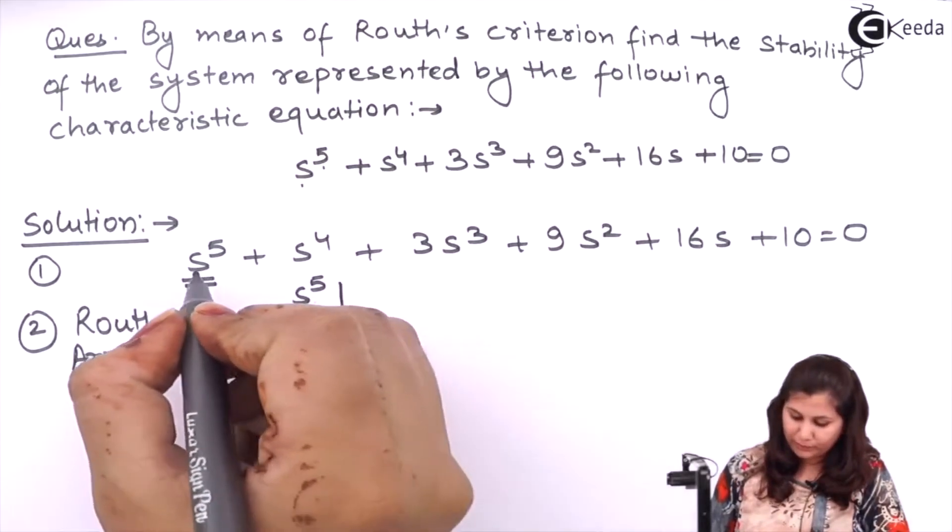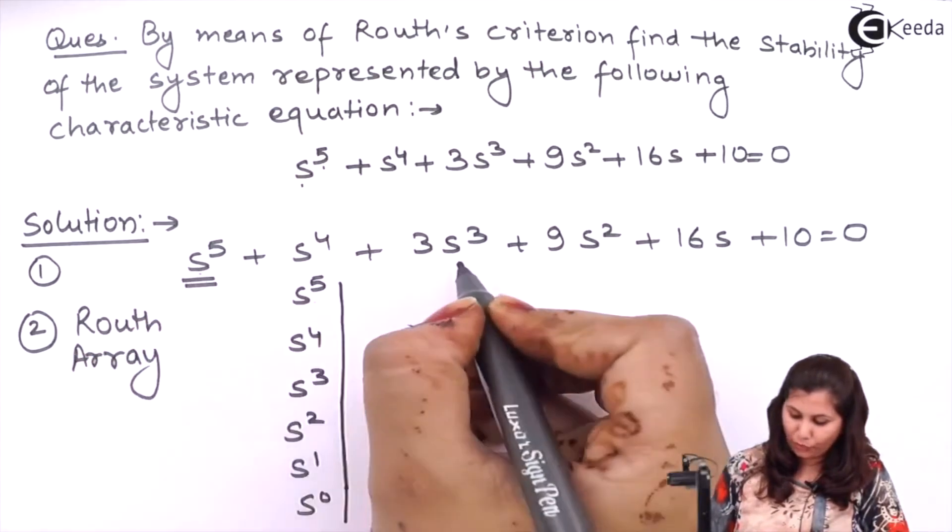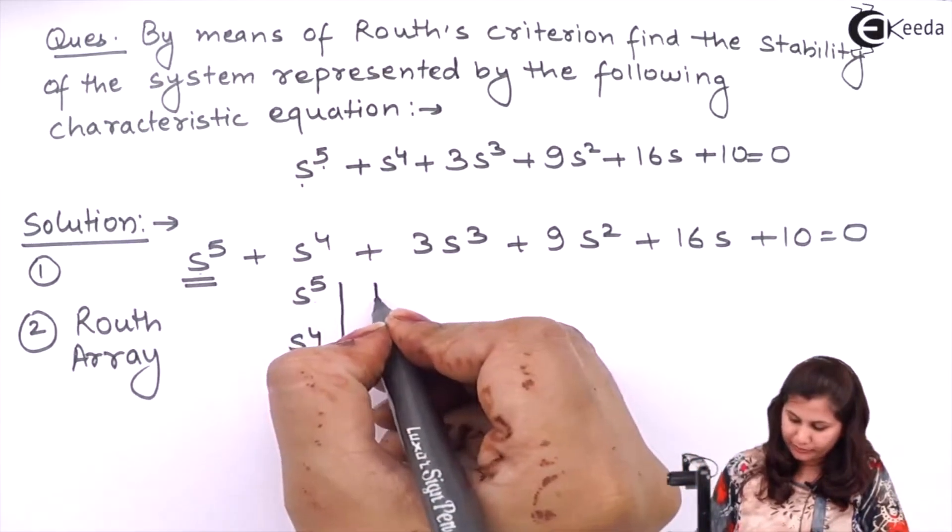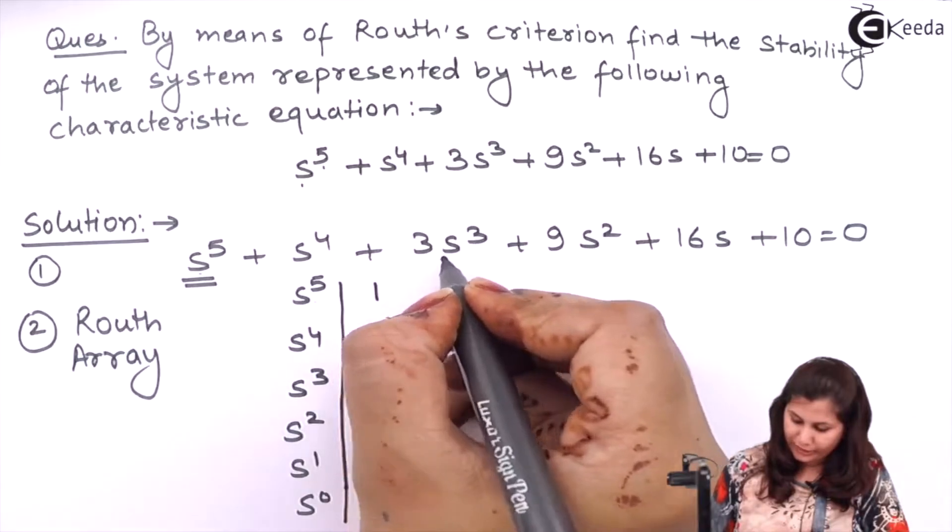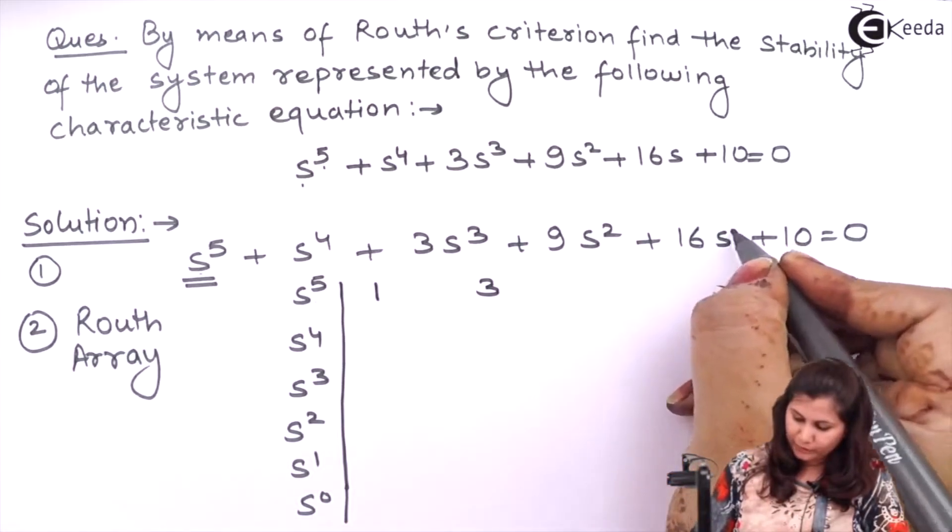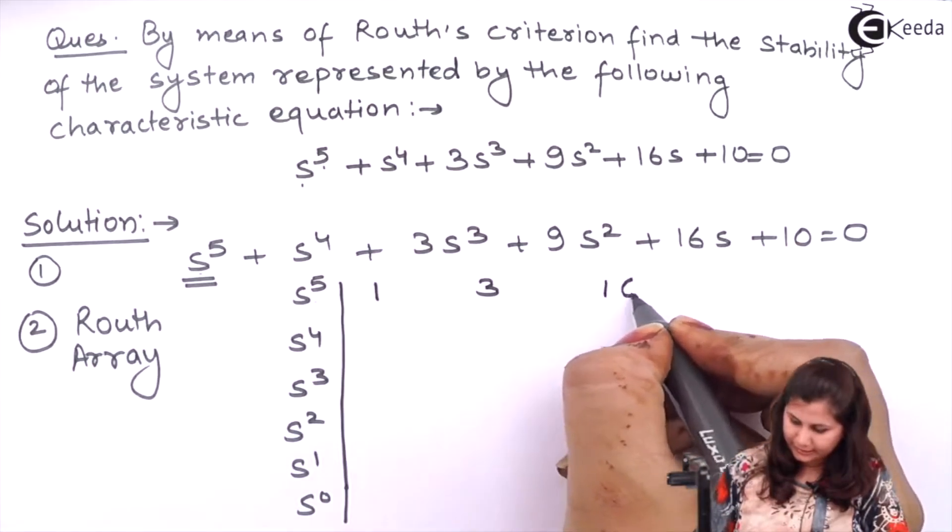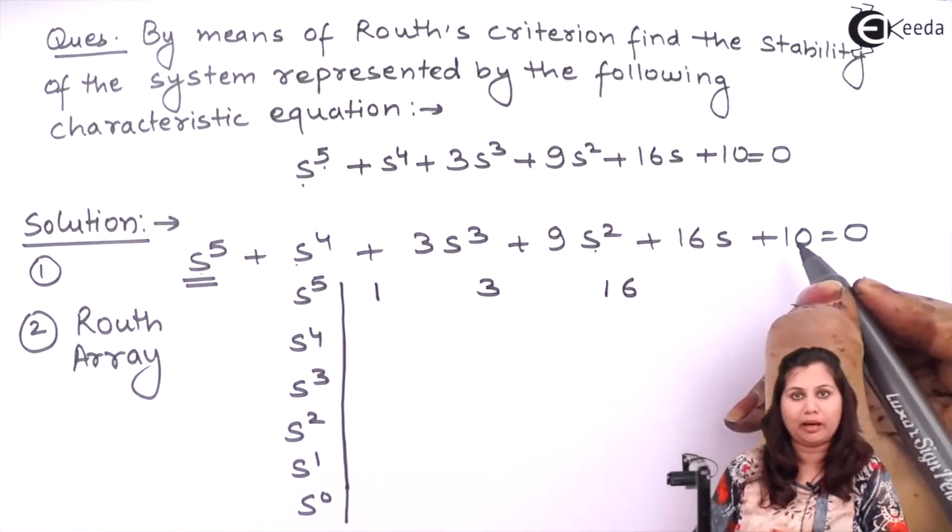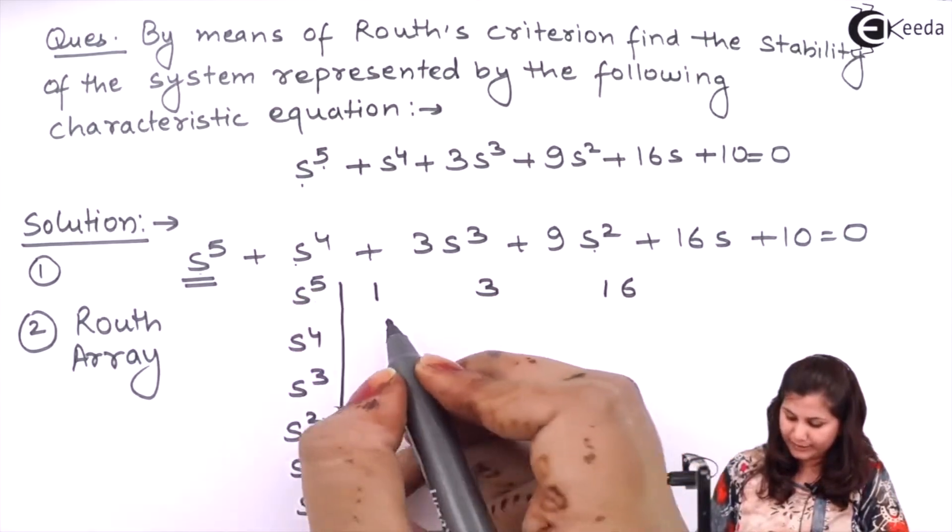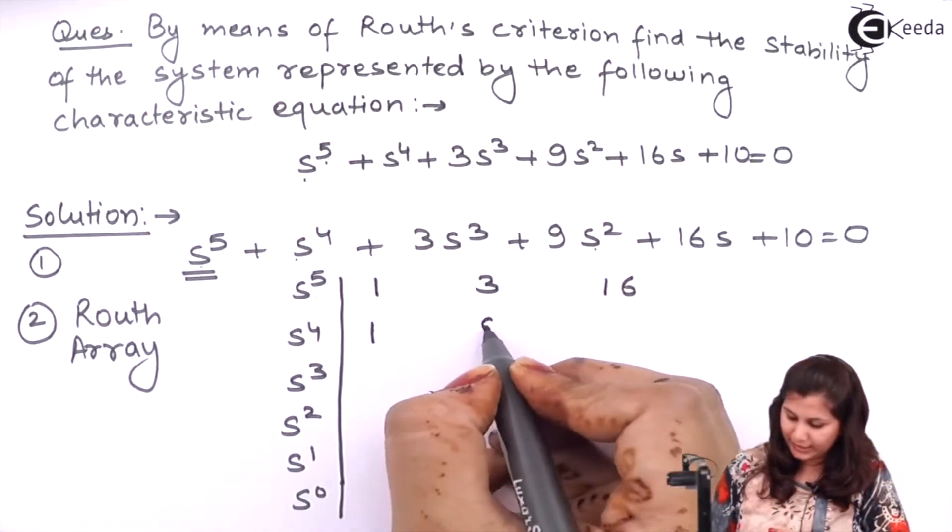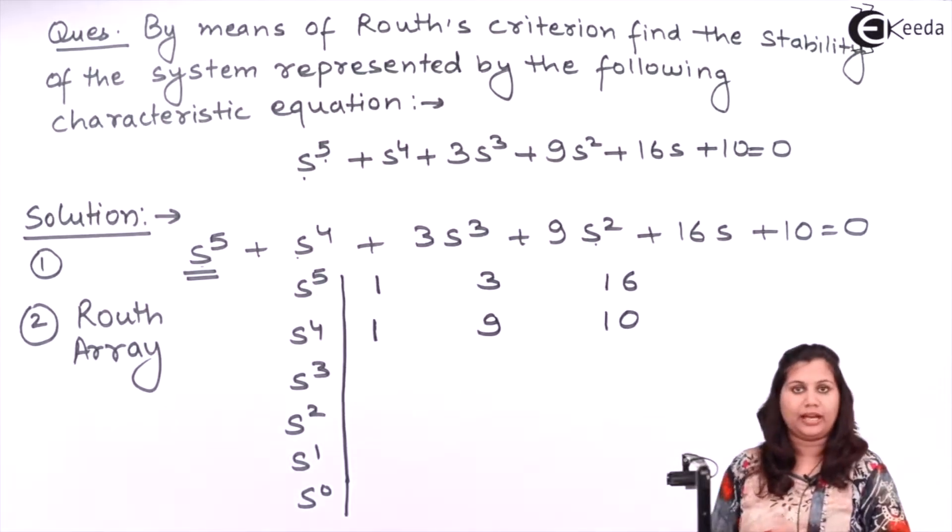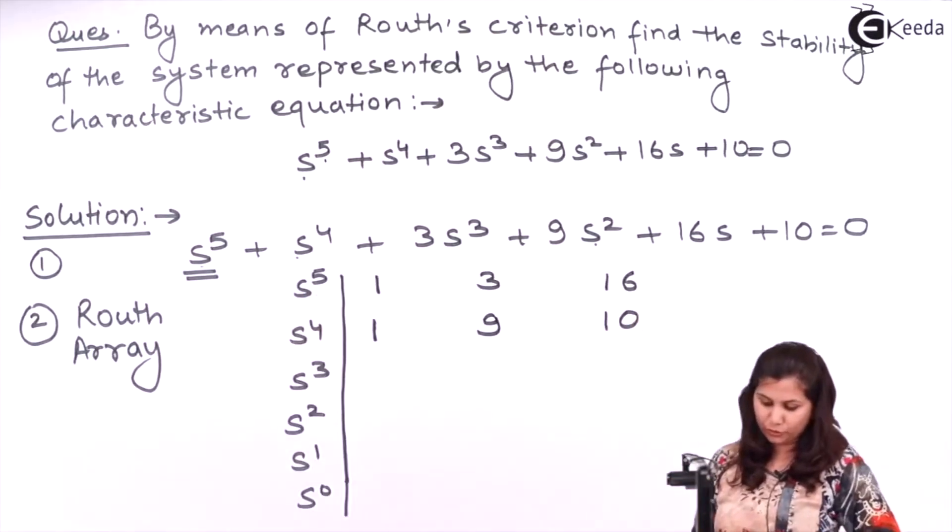Now coefficient of s to the power 5, that is coefficient of all the odd terms, will be written in the first row. So it will be 1, coefficient of s^3 will be 3, s to the power 1 is 16. Then s to the power 4, we will write the coefficient of all the even power of s. That is s^4 is 1, s^2 is 9, and s to the power 0 is 10. So we have formed these two rows.